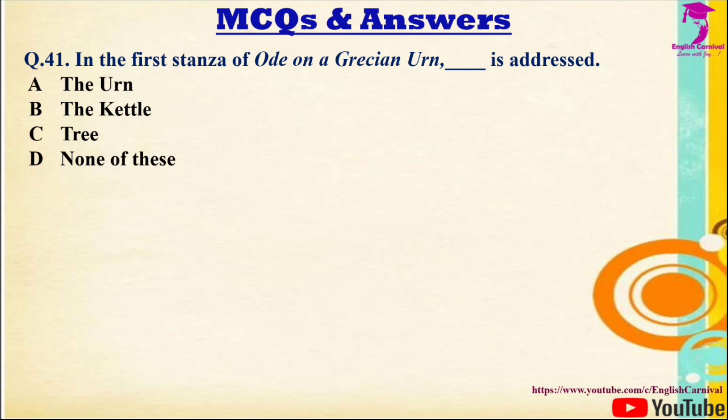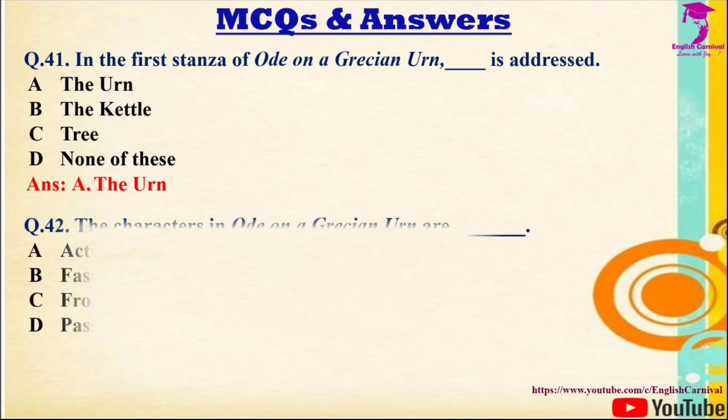Question 41: In the first stanza of Ode on a Grecian Urn, — is addressed. Options: A) The urn, B) The kettle, C) The tree, D) None of these. Correct answer is A — the urn.